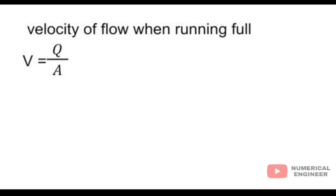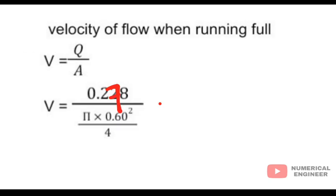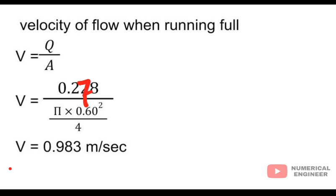Now we are calculating the velocity of flow when running full. V equals discharge by area. The discharge is 0.278 divided by area, pi times diameter squared by 4. Now we get the velocity is 0.983 meter per second.